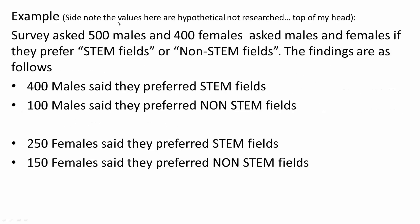Here is an example — these are hypothetical numbers, not research. A survey asked 500 males and 400 females if they prefer STEM fields or non-STEM fields. The findings: 400 males preferred STEM fields, 100 males preferred non-STEM fields, 250 females preferred STEM fields, and 150 females preferred non-STEM fields.